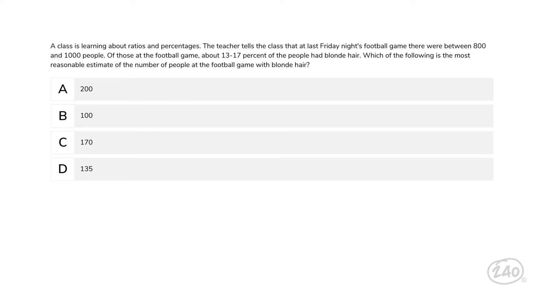Now let's look at one where you need to convert between a fraction and a percent. This one is a bit tricky. A class is learning about ratios and percentages. The teacher tells the class that at last Friday night's football game, there were between 800 and 1,000 people. Of those at the game, about 13 to 17 percent of the people had blonde hair. Which of the following is the most reasonable estimate of the number of people at the football game with blonde hair? We start by using 15 percent, the average number of 13 percent and 17 percent, as our percentage estimate. So 15 percent of 800 people would be 120, and 15 percent of 1,000 people would be 150 people. It's reasonable to estimate that between 120 and 150 people at the football game had blonde hair. 135 is the only number that fits within this range, so this is the best choice.